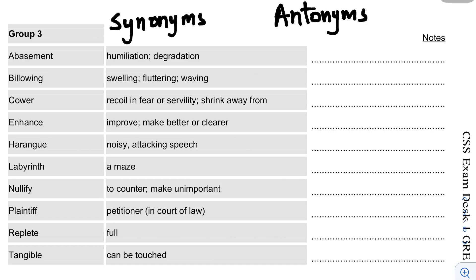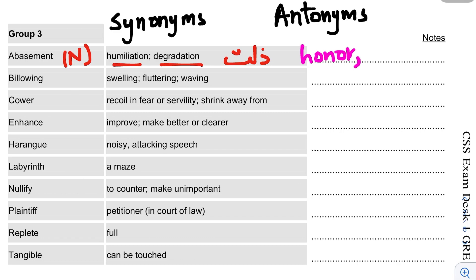So the first word is Abasement. This is a noun. It means humiliation or degradation. In Urdu it is called Zillat. Its antonym is Honor or Praise.